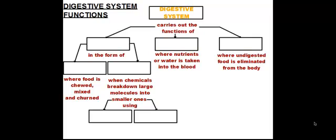Our digestive system carries out three functions. The first function is digestion, which is what the digestive system is named after. Digestion is the process in which we break down large molecules from our food into smaller molecules. The second function is absorption. Once we digest our food into smaller molecules, we can take the nutrients and absorb them into our blood so our cells can get them.